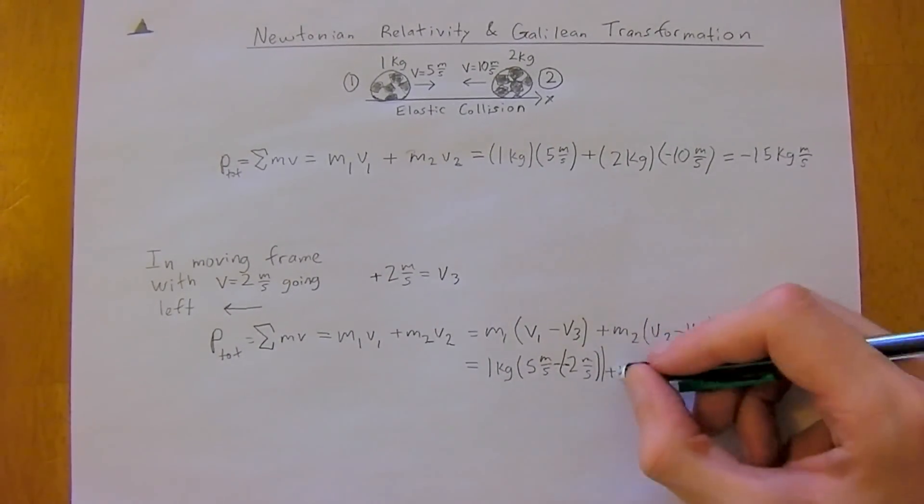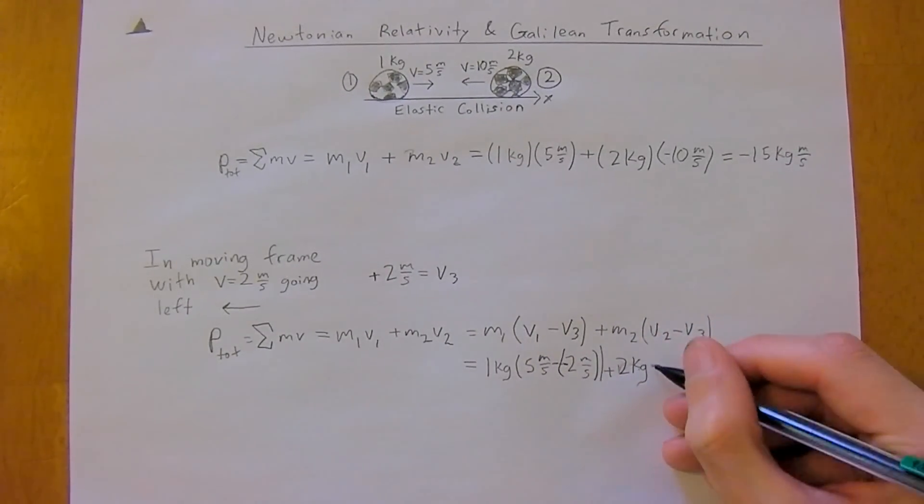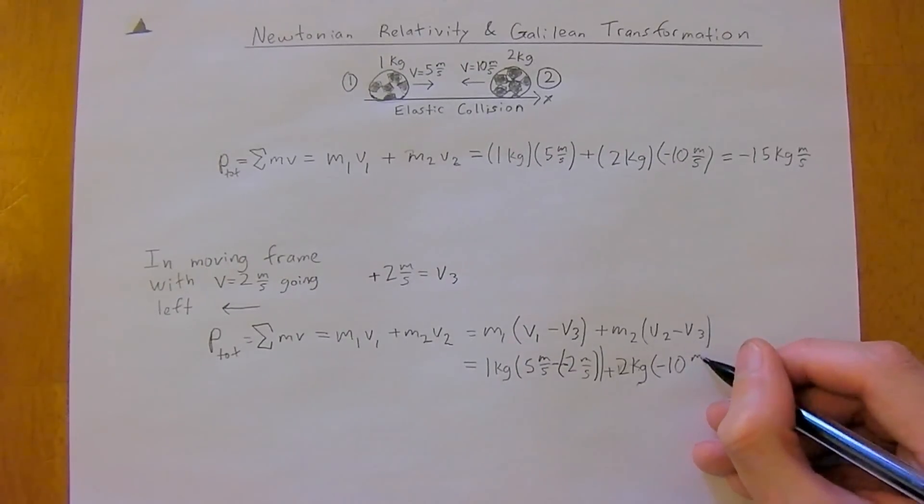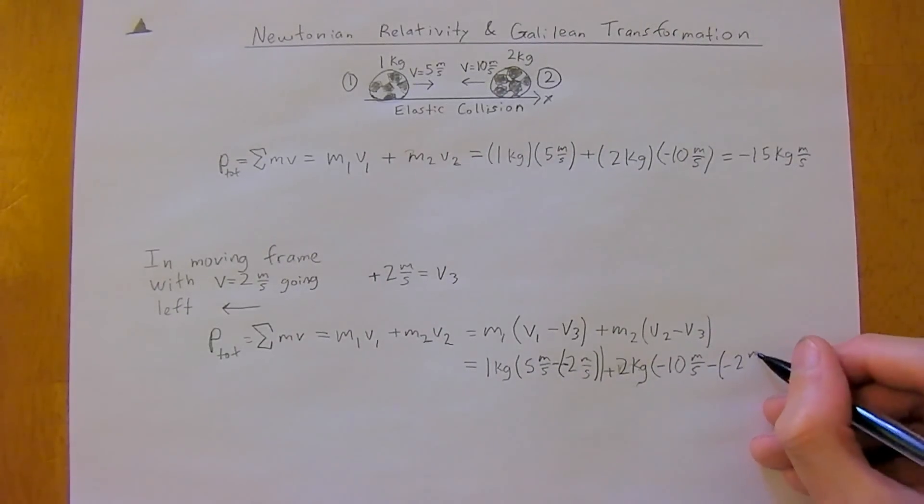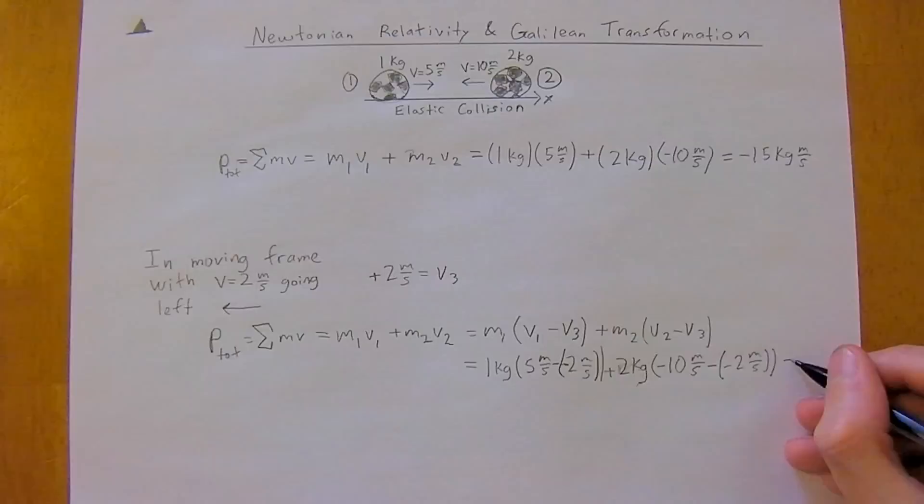Then plus m2, which is 2 kilograms, and velocity 2 is going left. Then minus negative 2 meters per second. And this is the way they usually want you to do it, which works out to negative 9 kilogram.